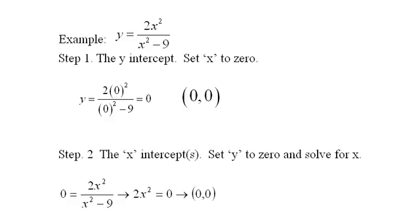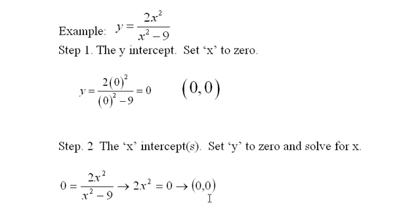Now, step 2 is to find the x-intercepts, and one of them we already know, don't we? It's (0,0), and in fact, when we set the whole expression to 0, we only have to worry about setting the top to 0, and we do that.